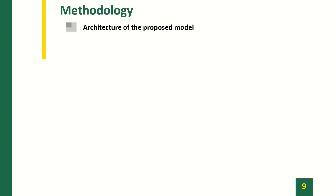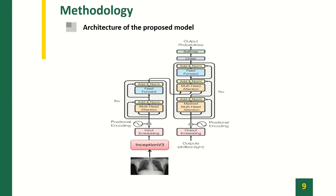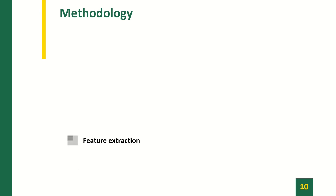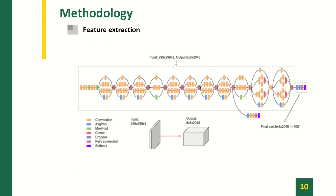We initially present the global architecture of the proposed model, which contains two main parts. The first part handles feature extraction using the pre-trained model Inception V3, and the second part is the transformer, which serves as the fundamental framework of our project. For feature extraction, we used the pre-trained model Inception V3, trained on the ImageNet dataset, to capture visual features from medical images. We pre-processed all images to the same size of 299×299×3 before feeding them into the model after removing the final classification layer, obtaining a feature map of size 8×8×2048. These features are then fed into the transformer.